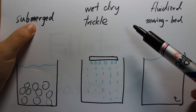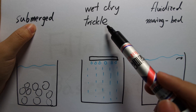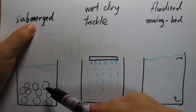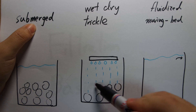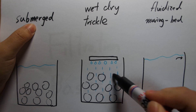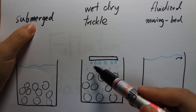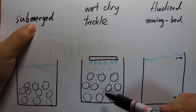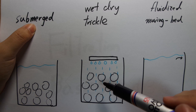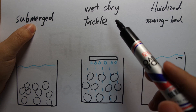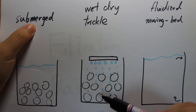A different way of setting it up is called a wet/dry filter, also known as a trickle filter. Instead of having the media all submerged in the water, the media is outside of the water and you have something that trickles water down onto the media — the water rains onto the media but the media is not submerged. That is what constitutes a wet/dry or trickle tower filter.